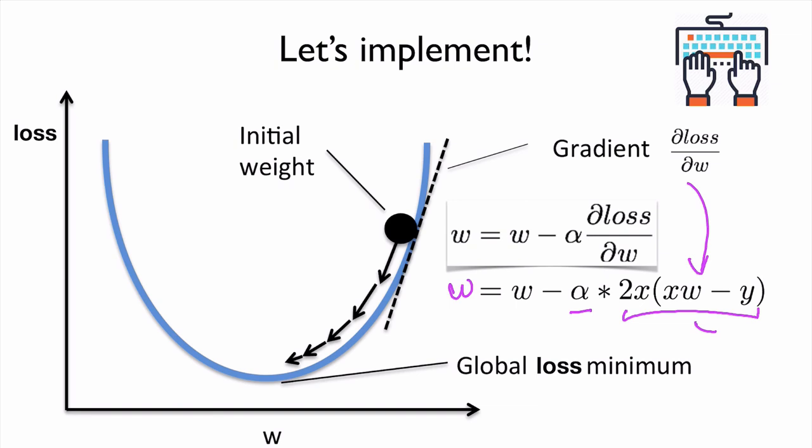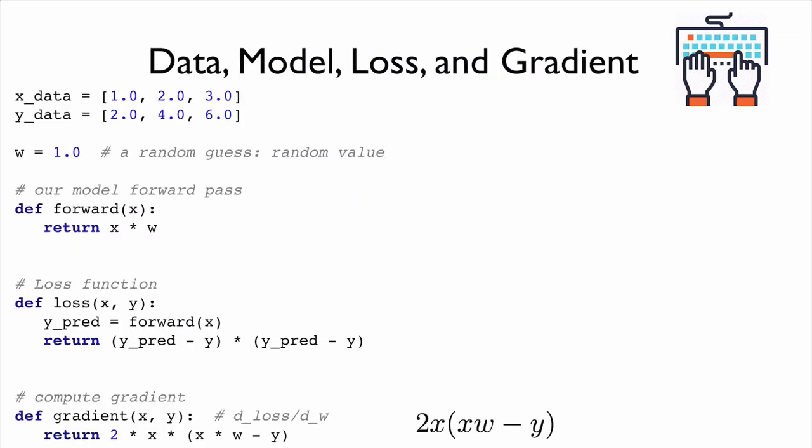So let's get into implementation. So first of all, like before, we're gonna define our x and y data. And our weight can start from any random value. Maybe you can start from 3.0, 5, 0, minus 3, depends on your guess.